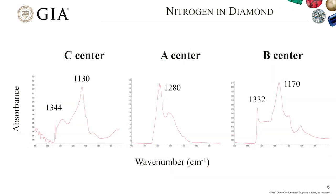Here is the infrared absorption spectrum of nitrogen. For the C form, you see two peaks at 1344 and 1130 cm⁻¹. The A center shows a peak at 1280, and B-form nitrogen shows a different absorption spectrum. This is a very sensitive technology to detect trace amounts of nitrogen in diamond, and it can also quantitatively determine how many ppm of nitrogen are present.